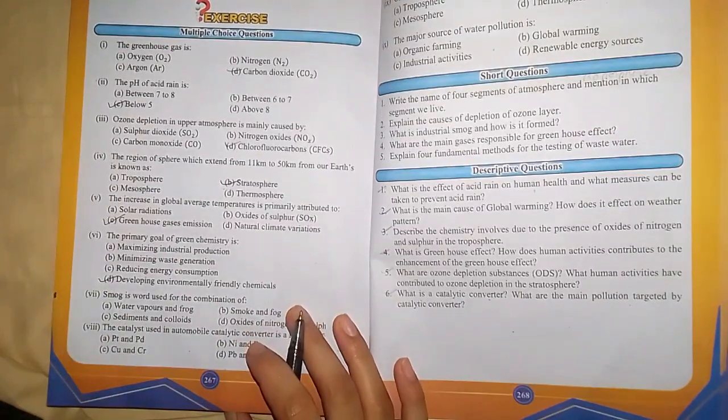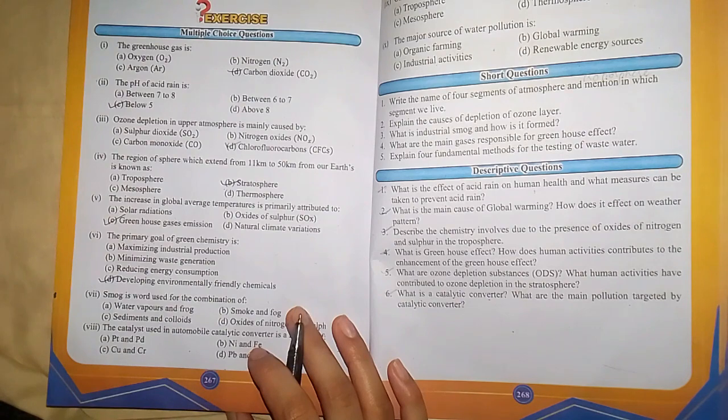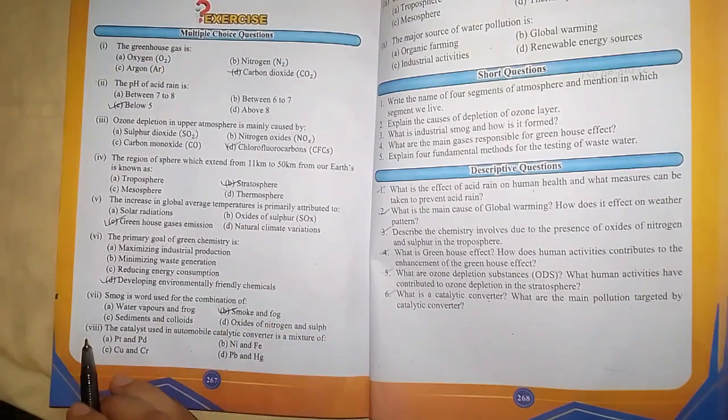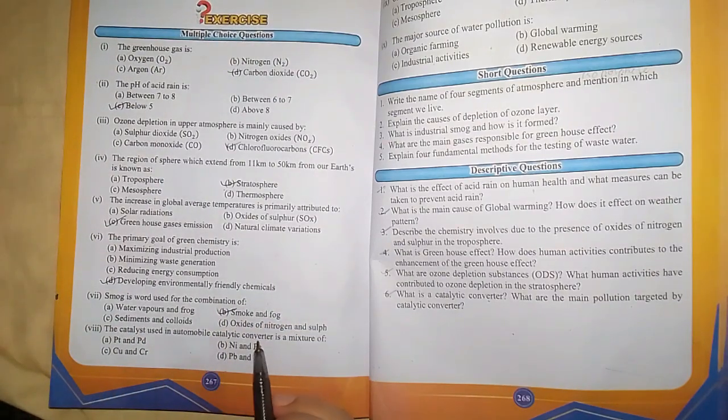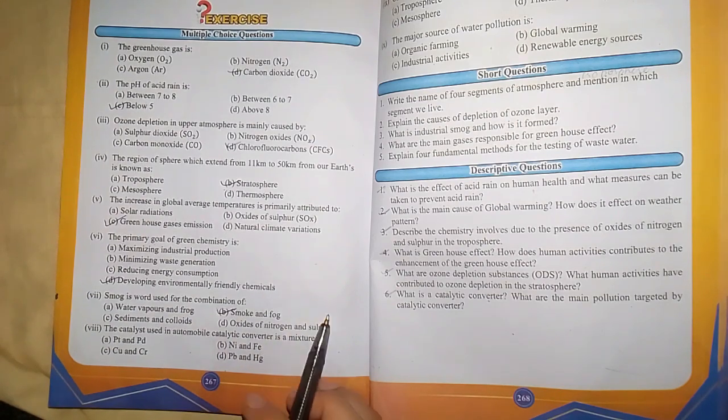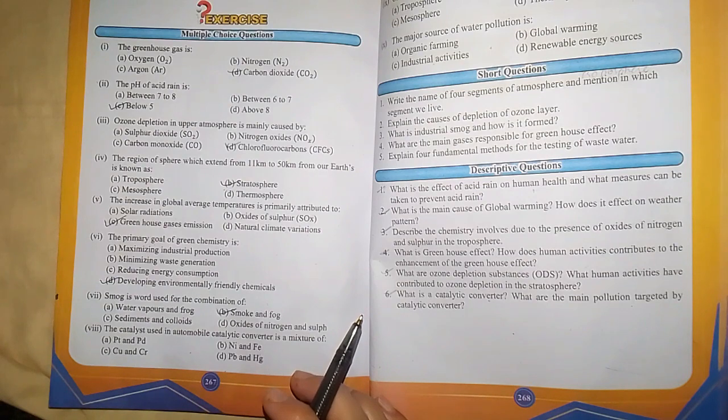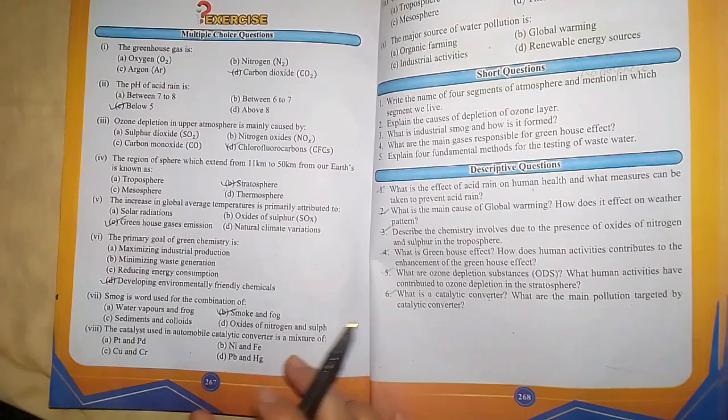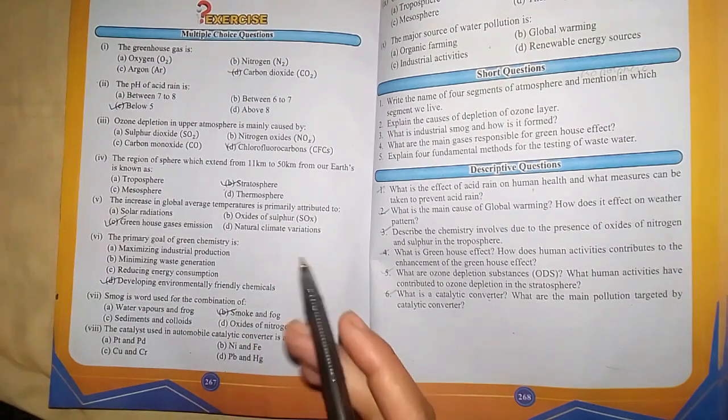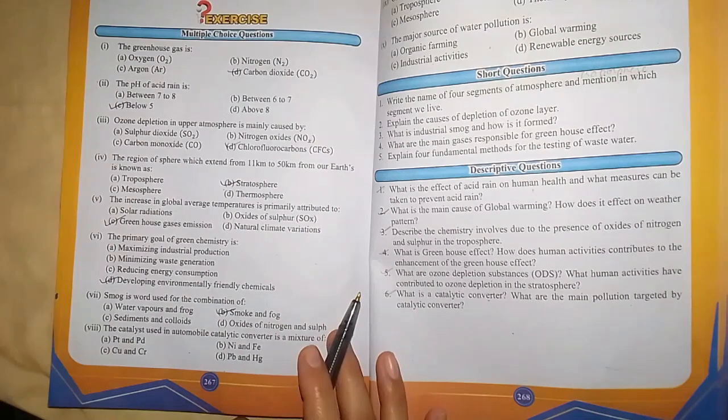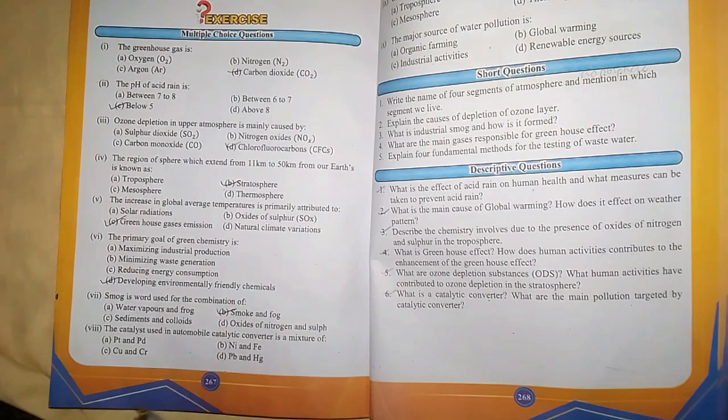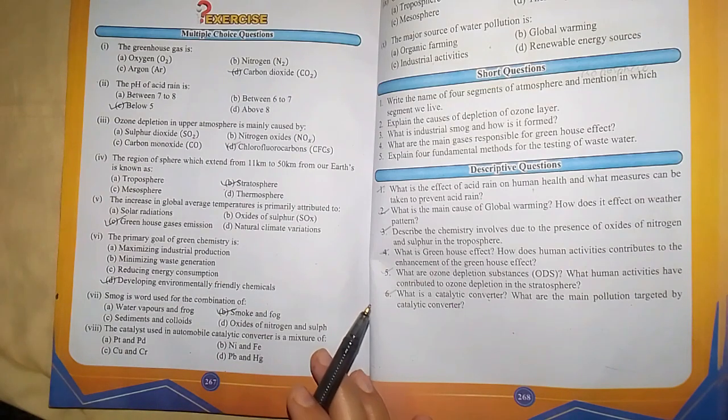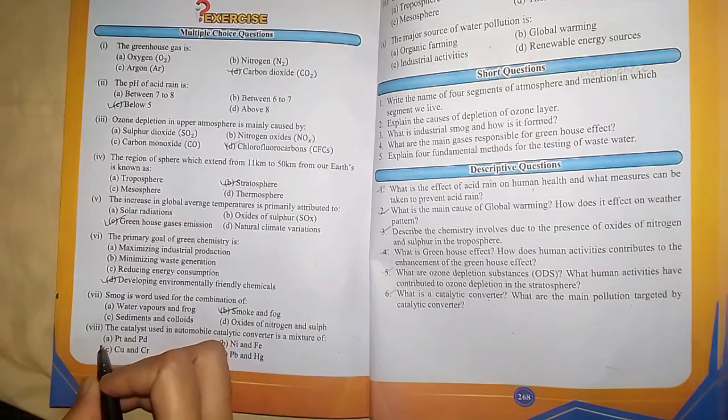MCQ number 7: Smog is a word used for the combination of smoke and fog. The correct option is B. MCQ number 8: The catalyst used in automobile catalytic converter is a mixture of metals. This device converts harmful chemicals into non-harmful or harmless chemicals. The metals used as catalysts are platinum and palladium, so the correct option is A.